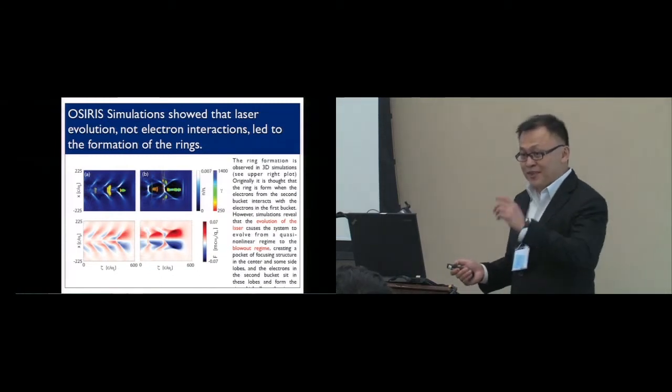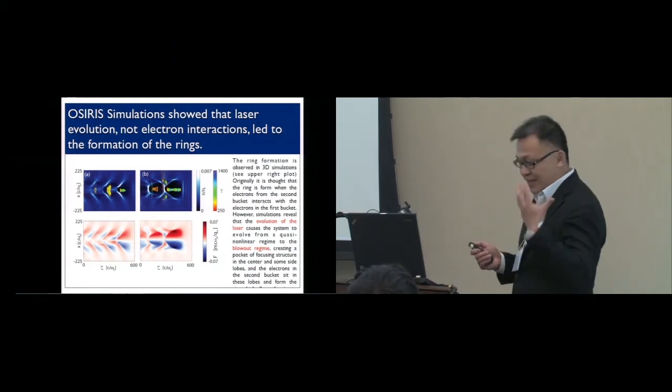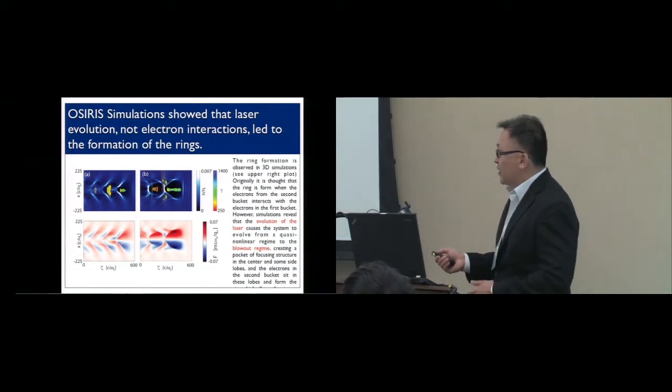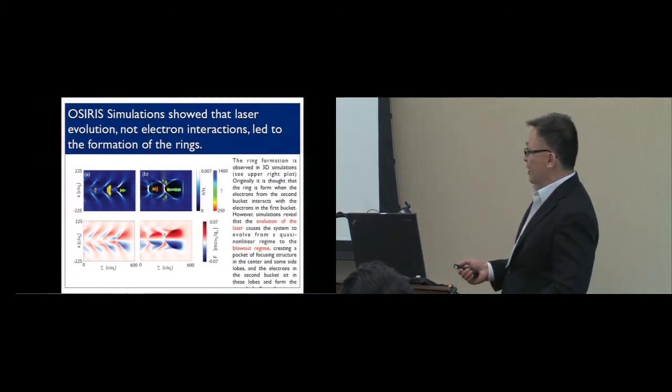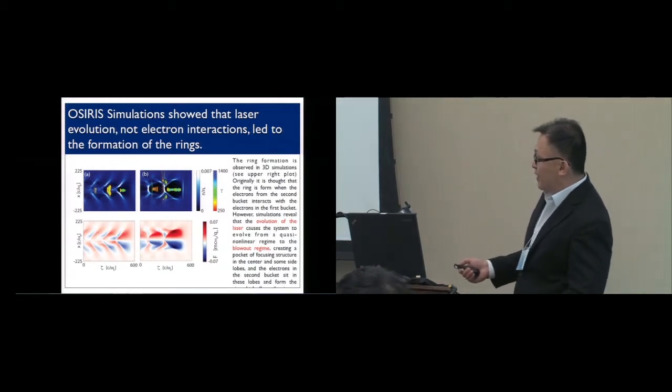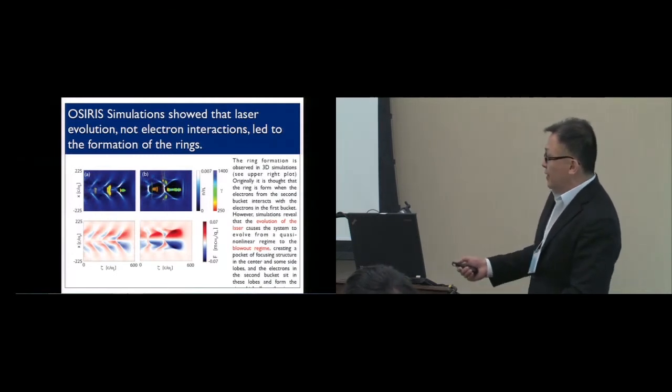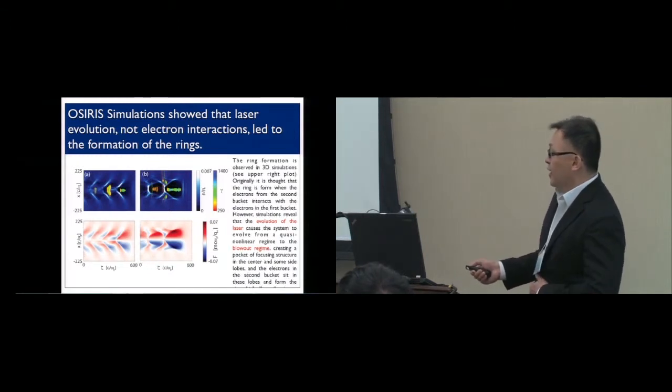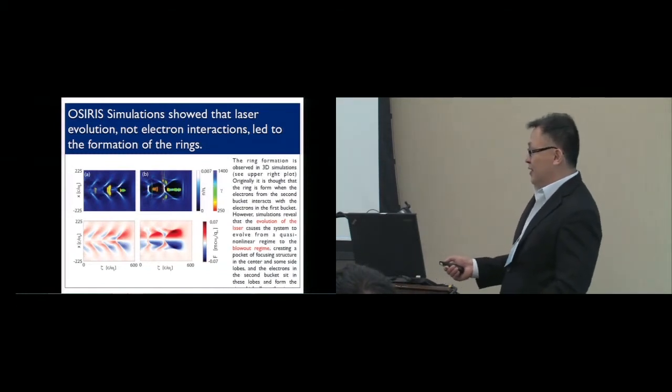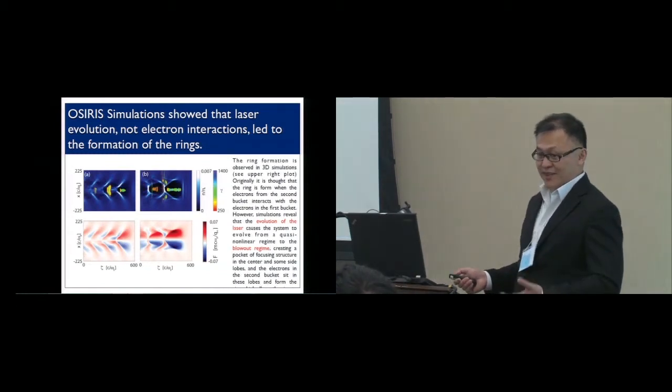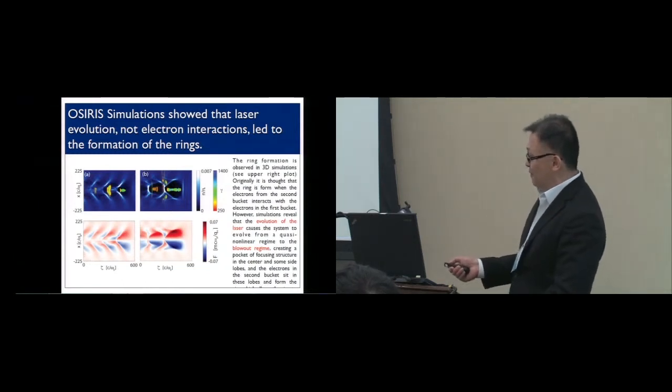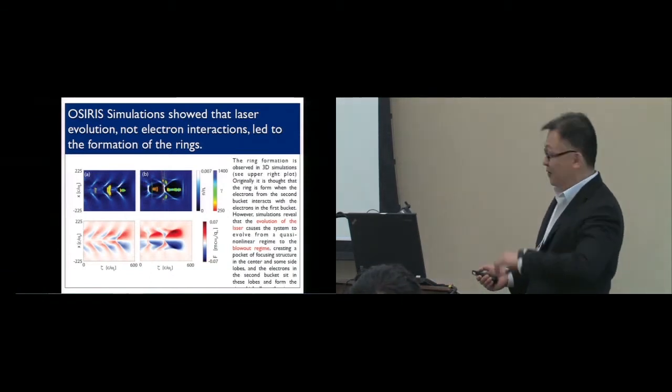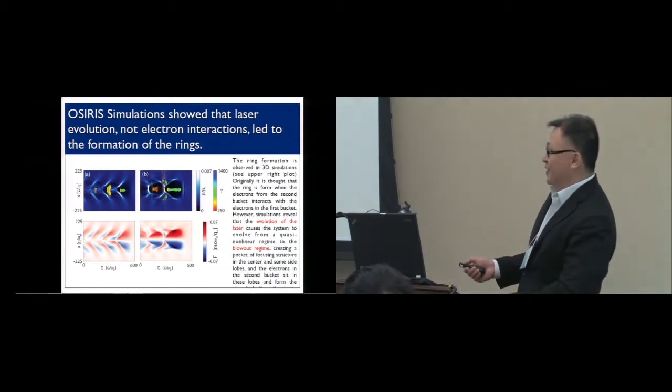But then, once we did the simulation, we realized that's not at all the case. What is actually happening is the evolution of the laser. At the bottom, I'm plotting the focusing force as a function of position. This is about halfway through the simulation. This is a snapshot at the end of the simulation. At the end of the simulation, the plasma accelerates in what's known as the blow-out regime, where inside the bubble, the field is strictly focusing. It's a very beautiful accelerating structure. What happens is that the laser was a little bit too wide to be in the blow-out regime early on in the simulation.